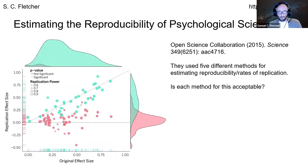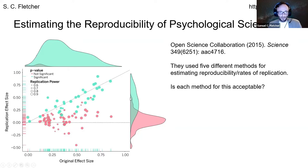The framing of the idea centers around a paper that I think many of us are already quite familiar with: the 2015 Open Science Collaboration paper on estimating the reproducibility of psychological science. In that project, they used five different methods for estimating reproducibility or rates of replication for a variety of different experiments in social and cognitive psychology. A question that I wanted to ask is how acceptable conceptually are each of those methods?